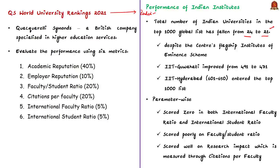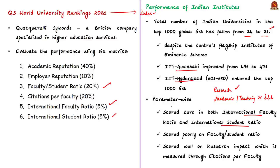Very few institutions like IIT Guwahati and IIT Hyderabad have performed better in this ranking, and from private universities, OP Jindal Global University from Haryana has shown improvement. According to the ranking compilers, Indian higher education performs more strongly in research quality, but institutions are failing to increase academic standing, teaching capacity, and levels of internationalization — parameters like faculty-student ratio, international faculty ratio, and international student ratio. Indian universities performed poorest in international faculty ratio and international student ratio, scoring zero on these two metrics, though they scored well on citations per faculty.